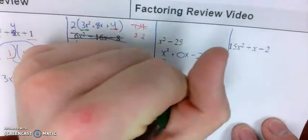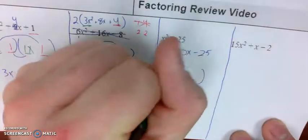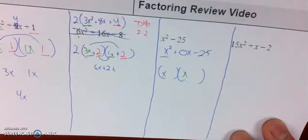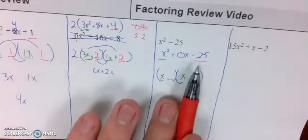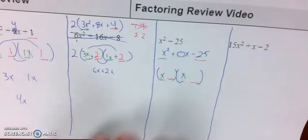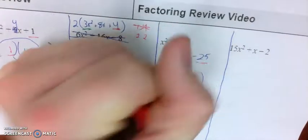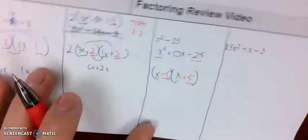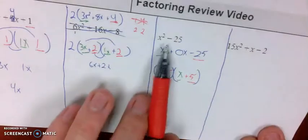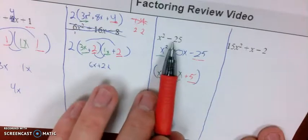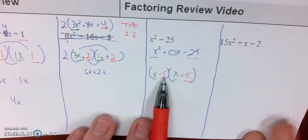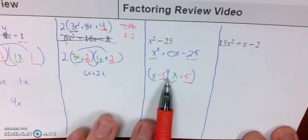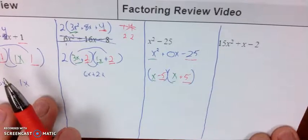First term has to be values that multiply to x squared. Only way to do that, x times x. Numbers that multiply to be negative 25 but cancel each other out to 0, that would be a negative 5 and a positive 5. This pattern is called difference of squares because these are both perfect square terms. These are called conjugate pairs where they look the same but one has a plus, one's got a minus.